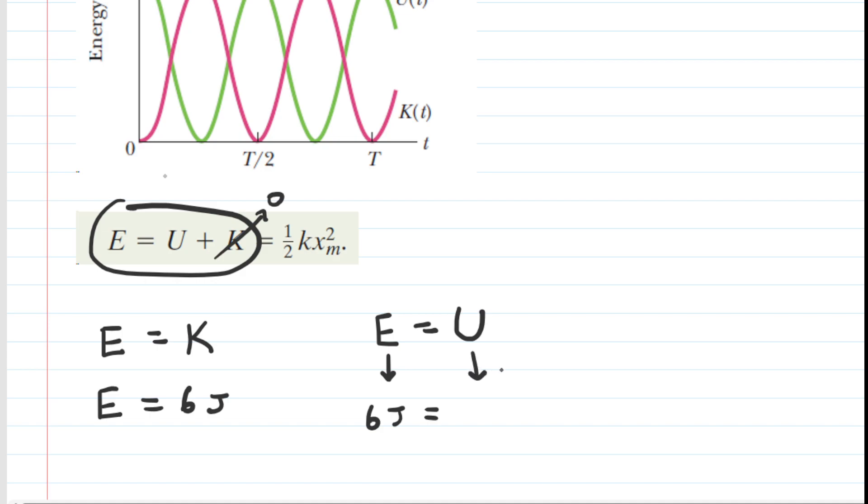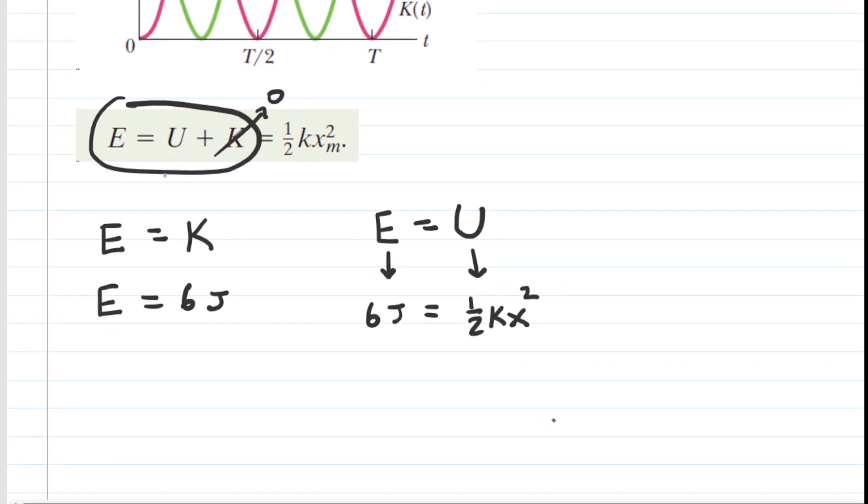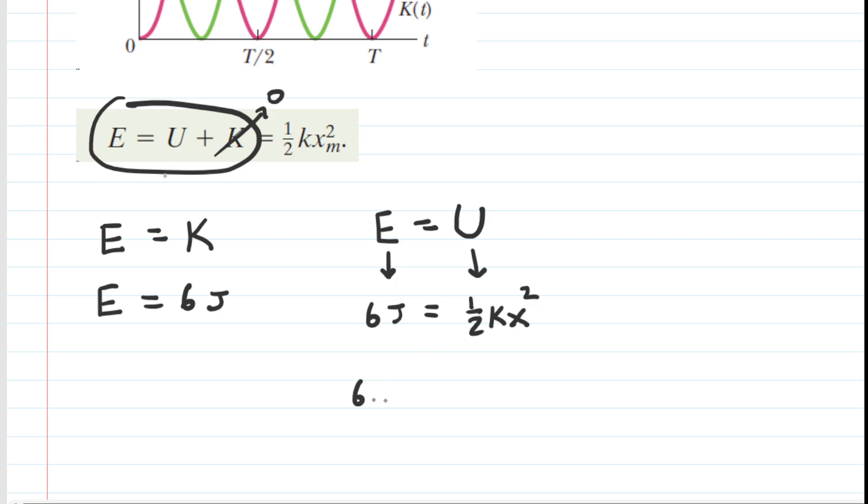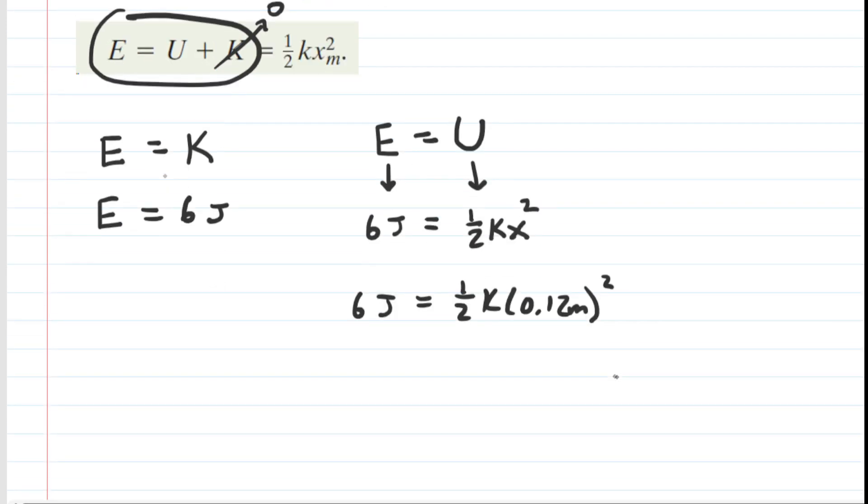And in addition, the elastic potential energy is equal to 1 half multiplied by the spring constant multiplied by the stretching length, or basically the distance by how much the spring has stretched, squared. Now from the graph, we know the distance that the spring stretched. It was that 0.12 meters. So we're going to plug in that 0.12 meters, and now we're going to be able to calculate the spring constant.